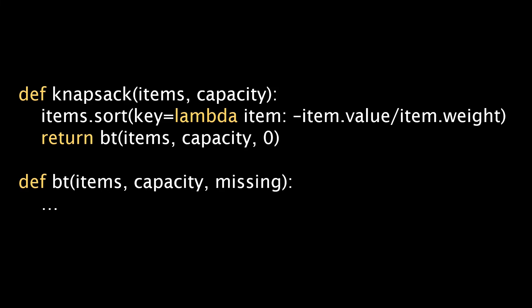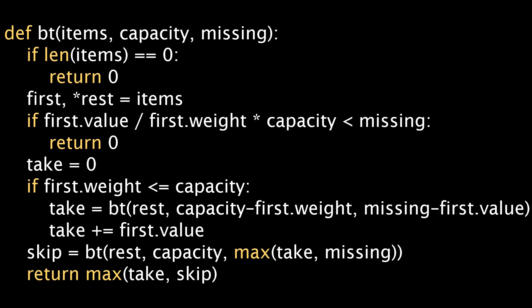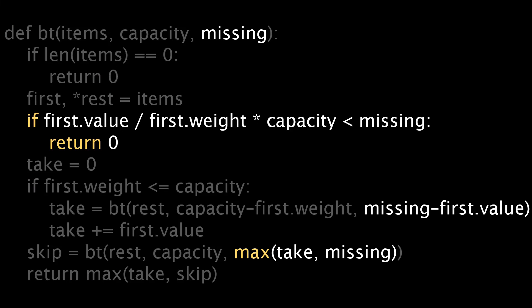Let us now look at the recursive function in more detail. At first, the bt function looks quite overwhelming, however most of it is exactly the same as the recursive function before. If we gray out all the known parts, only a few lines of code remain. The most obvious change is the new parameter in the recursive function. We call this parameter missing. It is the value which is still missing in the current solution. We need to add at least missing value in order to catch up to the best solution found so far.